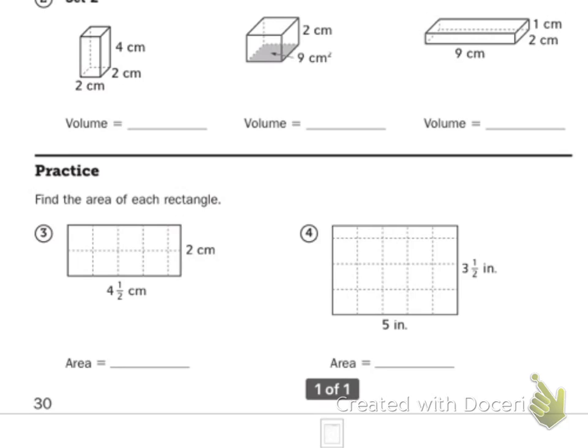Your next set, you have length, width, height. So 2 times 2 times 4. 2 times 2 is 4, 4 times 4 is 16 centimeters cubed.